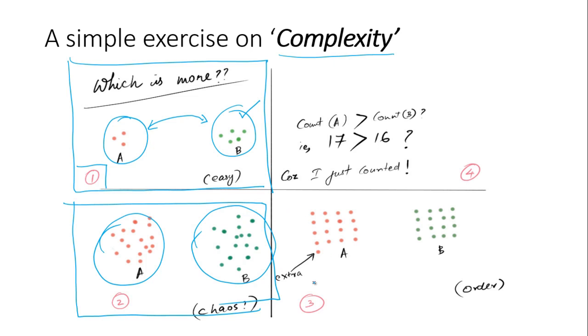In case three, I have almost the same number of dots as A and B, but they're arranged in order with rows and columns. By looking at both groups, I can say that there's one extra dot here. That means group A has more dots because of this extra dot which is obviously present there.